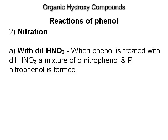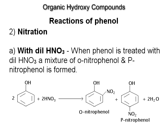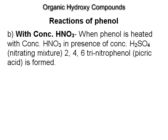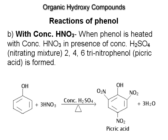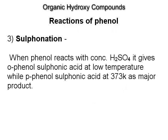Nitration. With dilute HNO3: when phenol is treated with dilute HNO3, a mixture of o-nitrophenol and p-nitrophenol is formed. With concentrated HNO3: when phenol is heated with concentrated HNO3 in the presence of concentrated H2SO4 (nitrating mixture), 2,4,6-trinitrophenol (picric acid) is formed. Sulphonation: when phenol reacts with concentrated H2SO4, it gives o-phenol sulfonic acid at low temperature, while p-phenol sulfonic acid is the major product at 373 K.